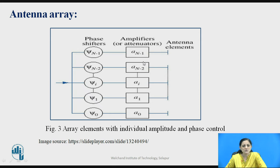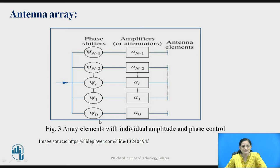This figure shows the array elements with individual amplitude and phase control points. There is a first element, a second element, and so on up to n number of elements. The amplitude for the first element is denoted as a₀ and the phase shift for the first element is given by ψ₀.